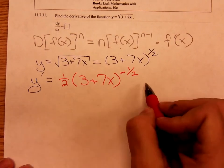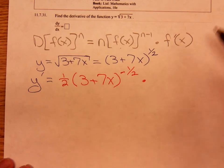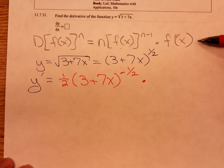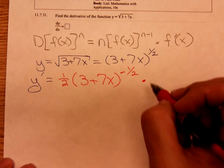You then multiply by the derivative of the inside function. What's the derivative of the inside function? Seven.